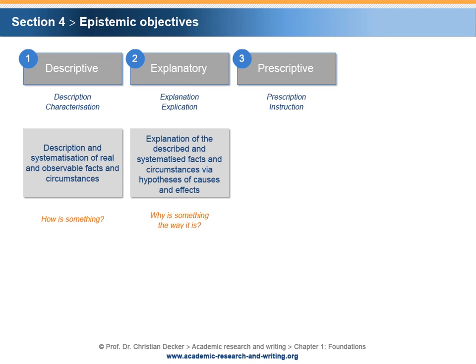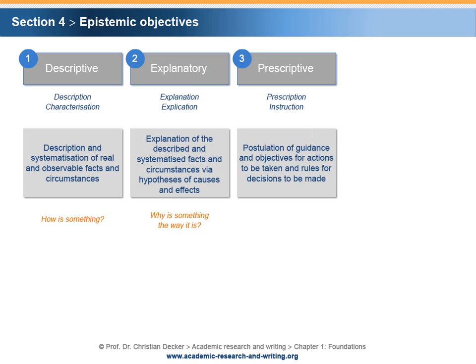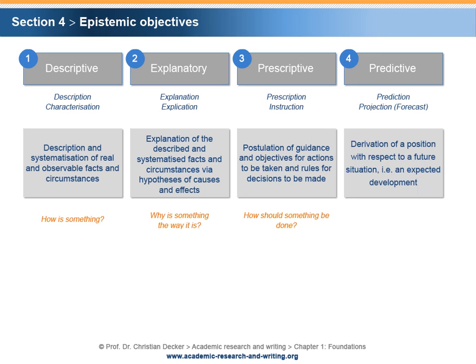A prescriptive objective serves the prescription or instruction, addressing the postulation of guidance and objectives for actions to be taken and rules for decisions to be made. The researcher asks the question: how should something be done? A predictive objective serves the prediction or projection, addressing the derivation of a position with respect to a future situation, meaning an expected development. The researcher asks the question: how will something be in the future?